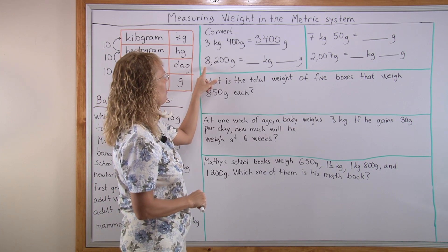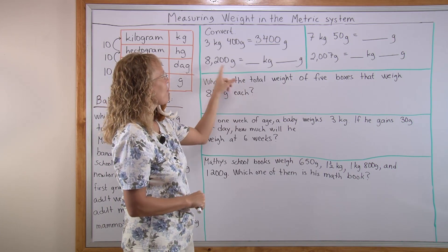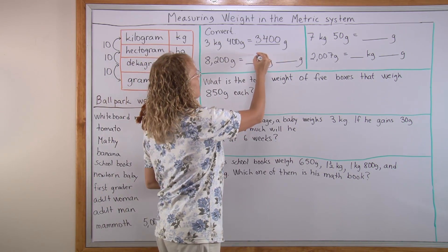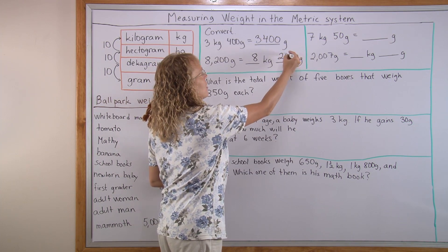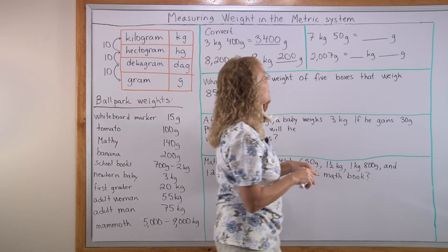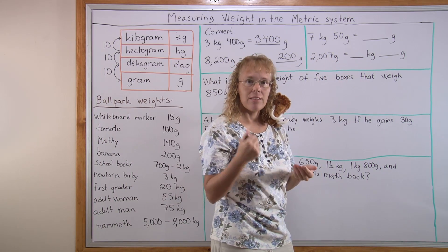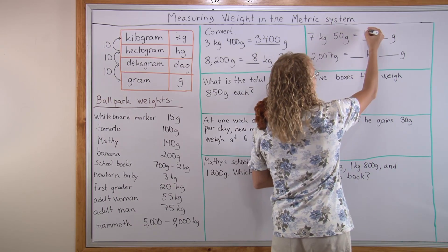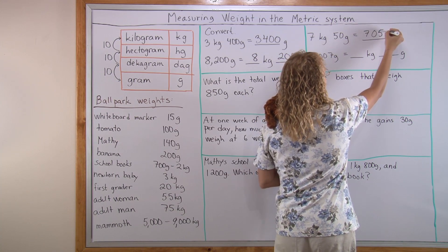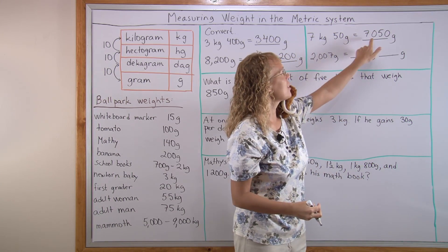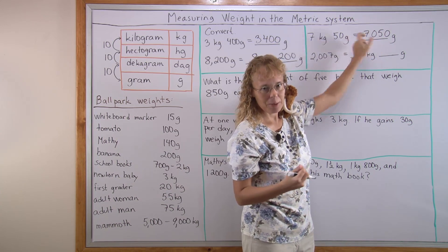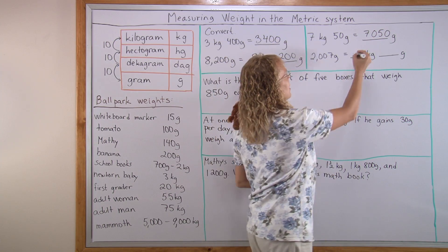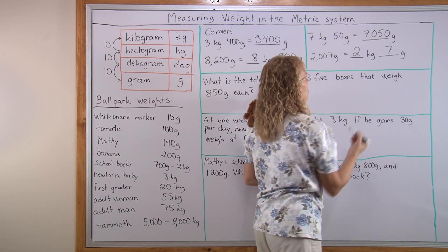And let's change the other way. 8,200 grams. The 8,000 grams makes 8 kilograms. So 8 here and then 200 here. This is very easy. Now 7 kilograms and 50 grams. 7 kilograms is 7,000 grams and then 50 to that. So 7,050. Just need to notice that there's a zero here in the hundreds place. 2,007 grams. That will be exactly 2 kilograms and then 7 grams.